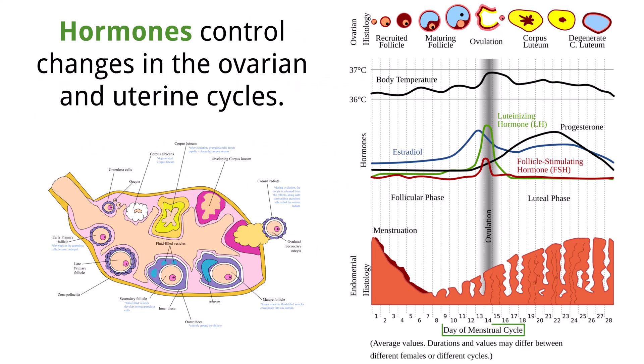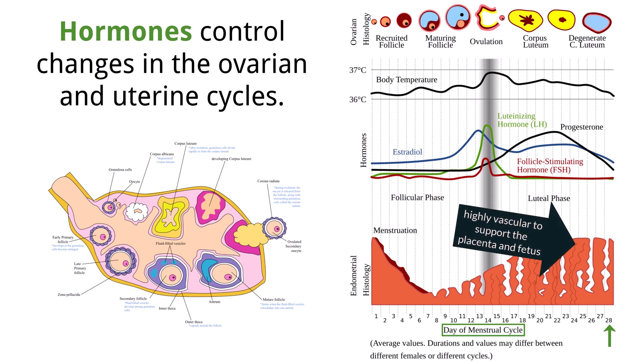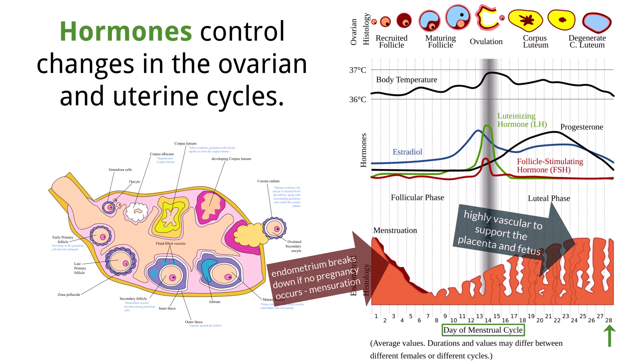The menstrual cycle begins in females during puberty. The cycle lasts approximately 28 days, with the purpose of timing the release of an egg from the ovary, called ovulation, as well as implantation of the egg into the endometrium. The endometrium is highly vascular, and if there is fertilization and pregnancy, the lining must be maintained to support the development of the placenta as well as the development of the fetus. If there is no pregnancy, the endometrium will break down and be passed out of the body — this is called menstrual flow.